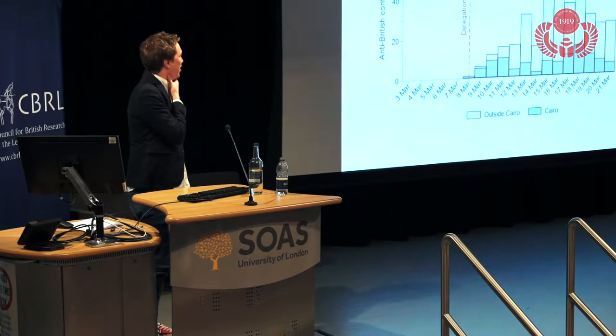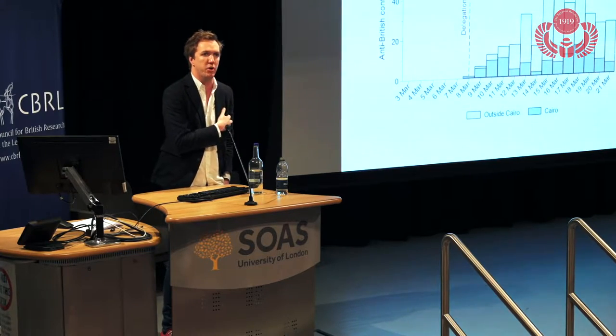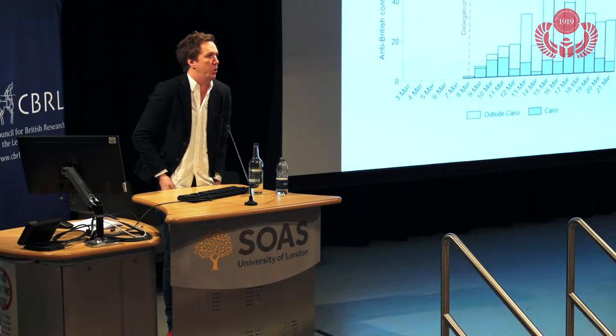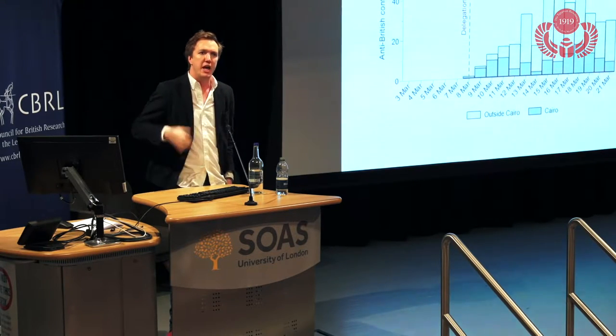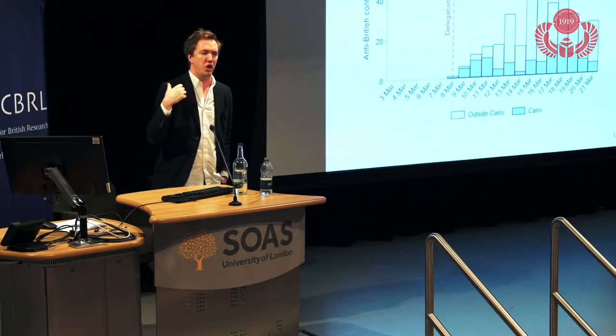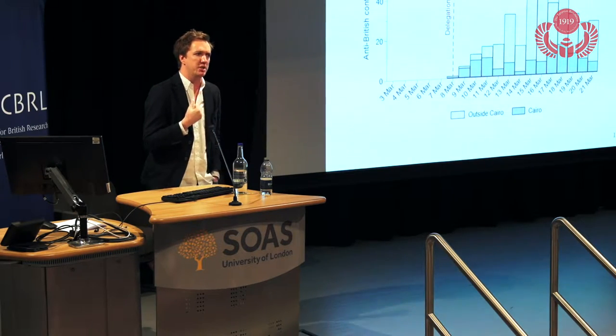This is a time series graph looking at the occurrence of protest over time. The x-axis is daily interval data, the y-axis is the number of protests in Egypt. What should be striking is the red dotted line: this is the 8th of March 1919, when Saad Zaghlul is initially arrested along with three other members of the Wafd, then taken to Alexandria and put on a boat to Malta. If you look at the time series to the left of it, there aren't very many events. In the weeks preceding the outbreak of protest there's very little mobilization at all.